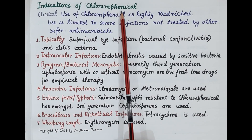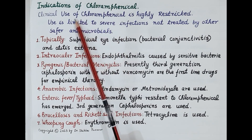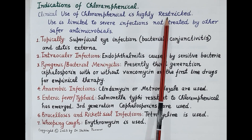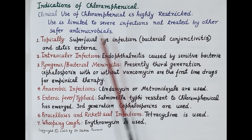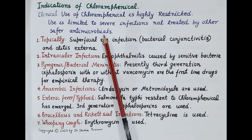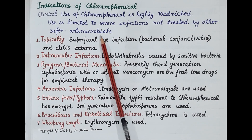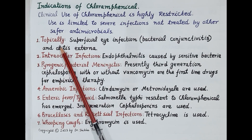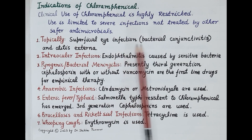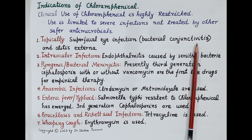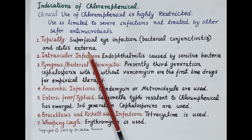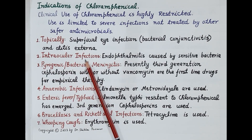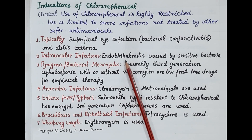The clinical use of chloramphenicol is highly restricted due to serious adverse effects like bone marrow depression and gray baby syndrome, so its use is limited to serious infections not treatable by safer antimicrobials. Topically, it can be used as an eye drop for superficial bacterial conjunctivitis, and as ear drops for otitis externa. It can also be used for intraocular infections.